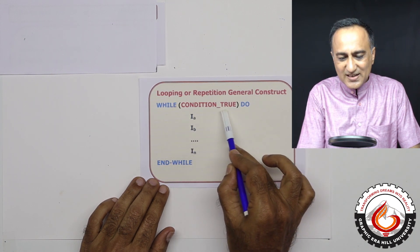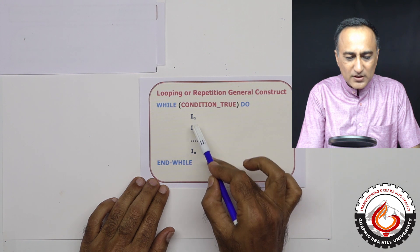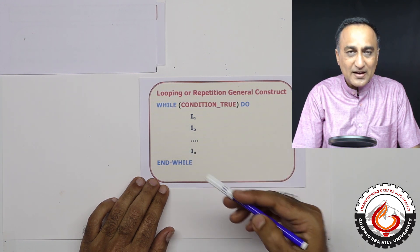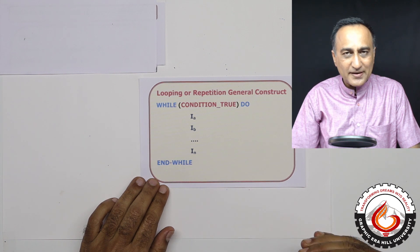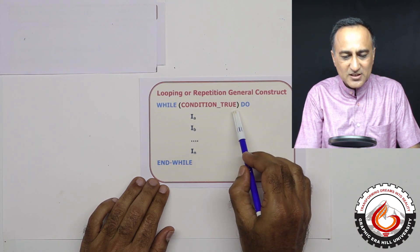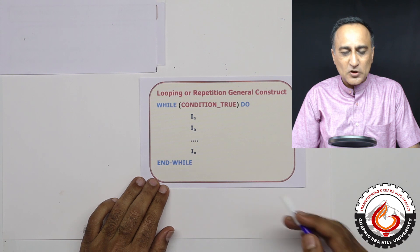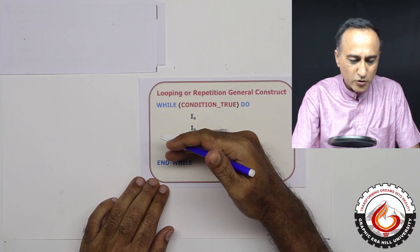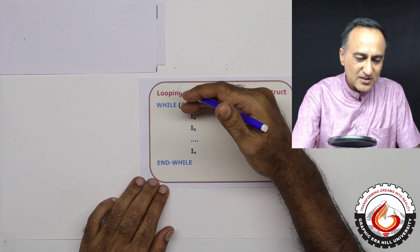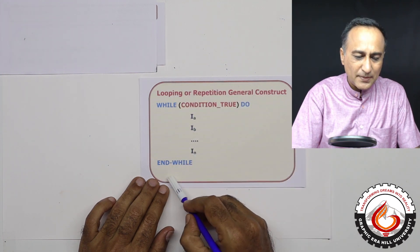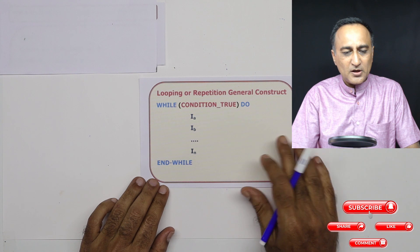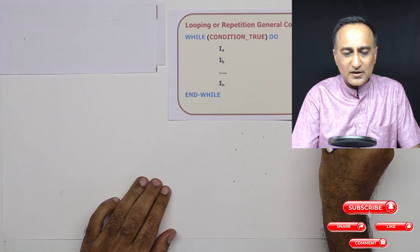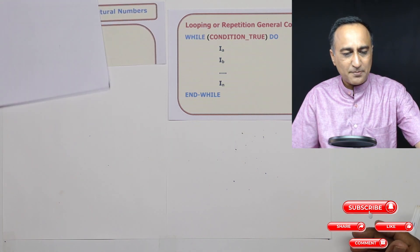As long as this condition is true, all the statements between while and end-while are executed repeatedly until this condition turns out to be false. If this condition continues to be true, these statements keep on executing; the minute this condition becomes false, it exits. To get a good understanding of the while loop, let's take a look at one more example.